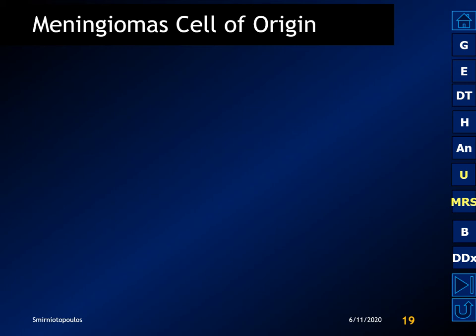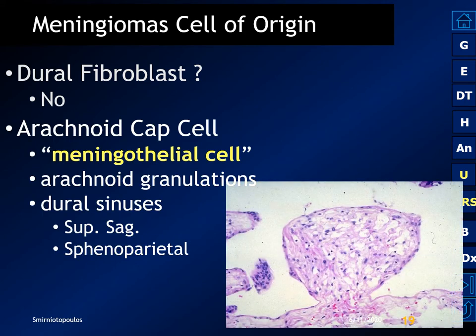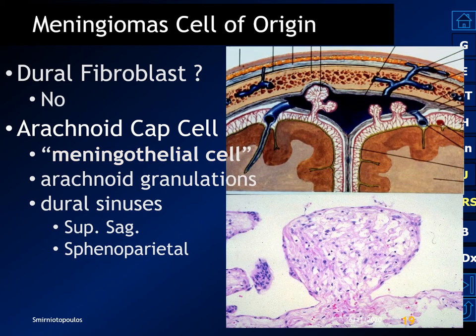What is the cell of origin for meningioma? Harvey Cushing thought it was the dural fibroblast, but it's not — it's the arachnoidal cap cell, the so-called meningothelial cell. These cells are most numerous in the arachnoid granulations, which are related to the large dural sinuses. That accounts for the association of meningiomas with involvement and invasion of the sinuses and occasionally obstruction of the sinuses.